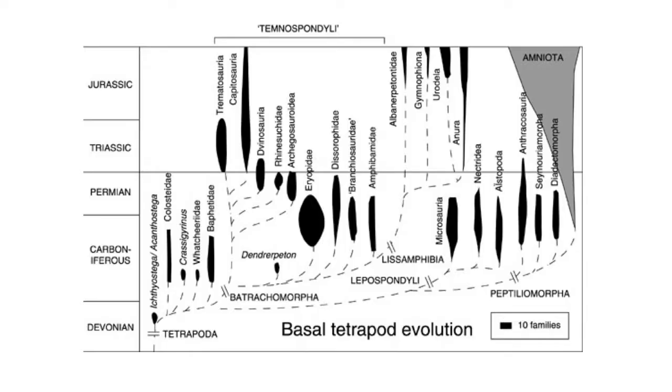Modern Lissamphibians appear for the first time near the Permian-Triassic boundary, with some of the earliest frogs and salamanders dated to this time. The origin of Lissamphibians is often placed within the Temnospondylans, because of similarities in the skull with earlier fossil Temnospondylans. Yet in the earliest fossils of Lissamphibians, the vertebral centrum may have resembled a Lepospondylan condition, and some authors have suggested Lepospondylans as the origin for some groups.